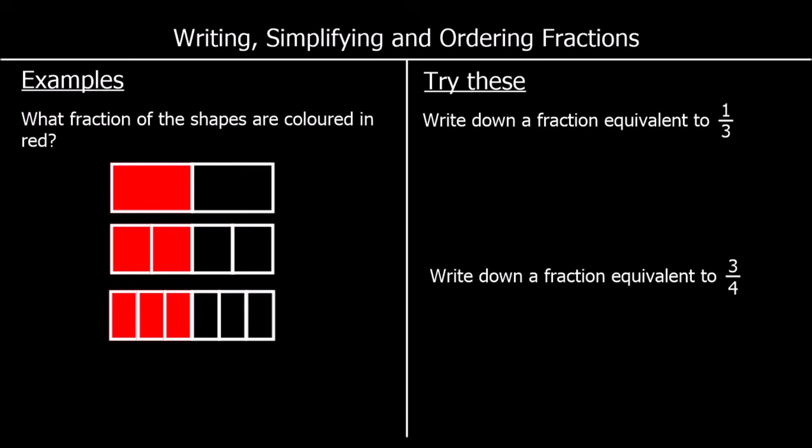Here we're looking at equivalent fractions. The question says what fraction of the shapes are coloured in red. For the first one, there are two parts. One is coloured in red. So that's one out of two — one over two or a half is red.